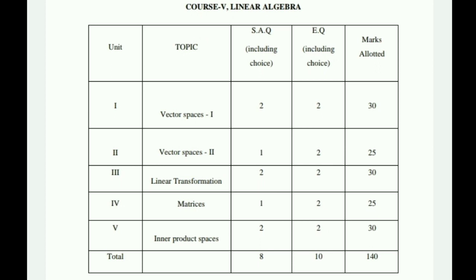Coming to this video — in Mathematics there are two papers. Paper One covers Real Analysis; a syllabus video and blueprint for that have already been done separately. Now coming to Paper Two: Linear Algebra, also known as Course 5. For example, if you are in MPCS, Mathematics has two papers, Physics has two papers, Computer Science has two papers. These two papers will each have separate exams — morning and afternoon. More details will be covered in future videos. So, this video is about Fourth Semester Mathematics Paper Two: Linear Algebra, Course 5.